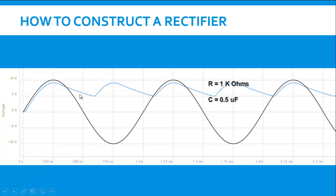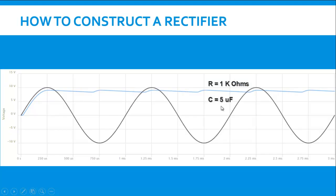Now this is the value across the load which is not as good or as straight as we would like it to be. If we increase the capacitor value to 5 microfarad instead of 0.5 we will get more or less a straight line.